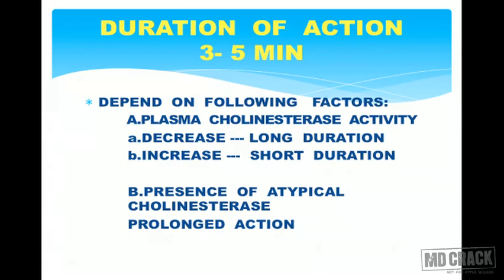The duration of action of succinylcholine depends on two factors: first, plasma cholinesterase activity, and second, presence of atypical cholinesterase. If plasma cholinesterase activity is decreased, the duration of action of succinylcholine increases; if activity increases, duration decreases. This is because succinylcholine is metabolized by plasma cholinesterase — an important exam point.